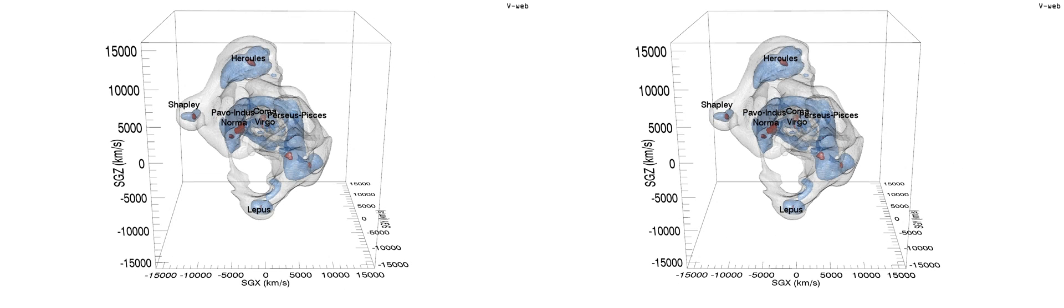Here we see contours of the cosmic web as defined by the velocity web. Local eigenvalues of the shear tensor are evaluated giving the red, blue, and white contours enclosing knots, filaments, and sheets.